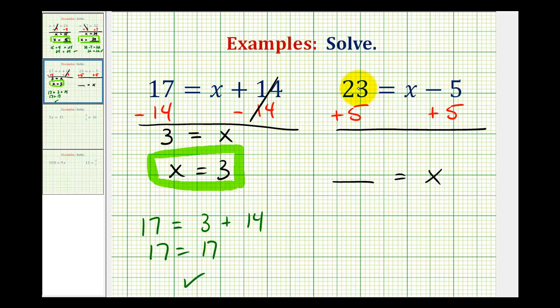On the left side, we have 23 + 5, which equals 28. We bring down the equal sign. On the right side, -5 + 5 = 0, so we're left with x. Now x is isolated.